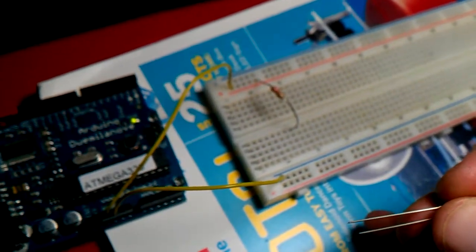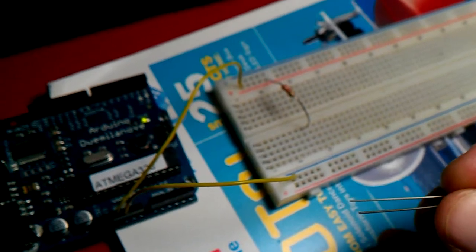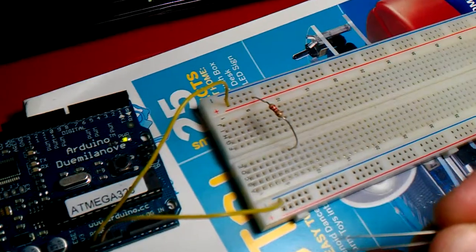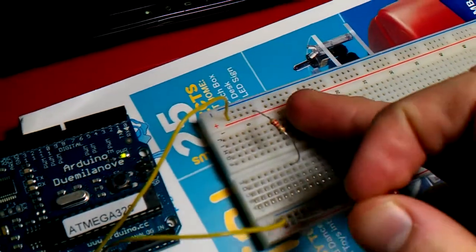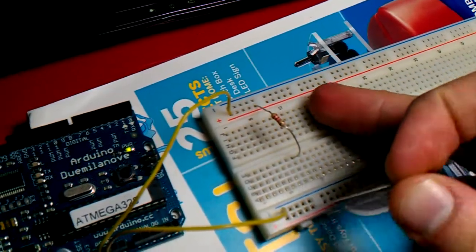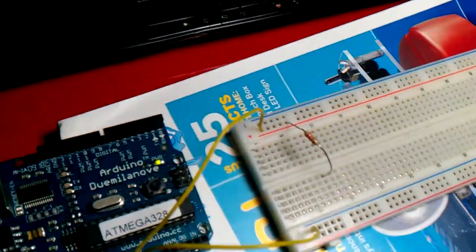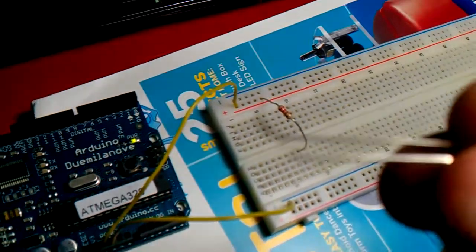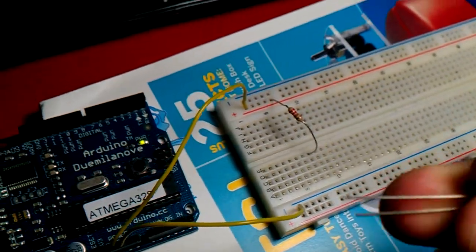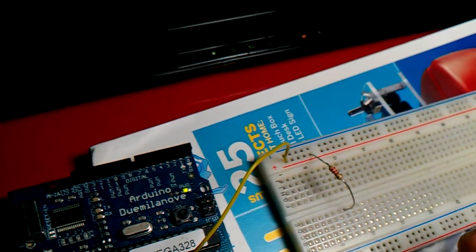Basically, the anode always needs to point towards where your voltage is coming from. In this case my voltage is coming from the red rail on the top here.